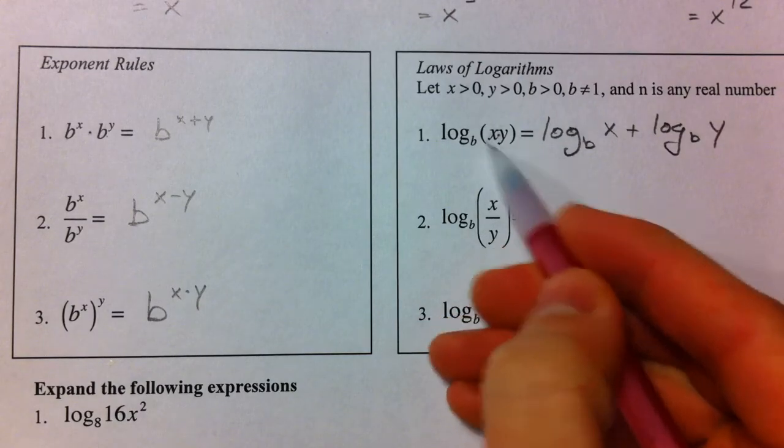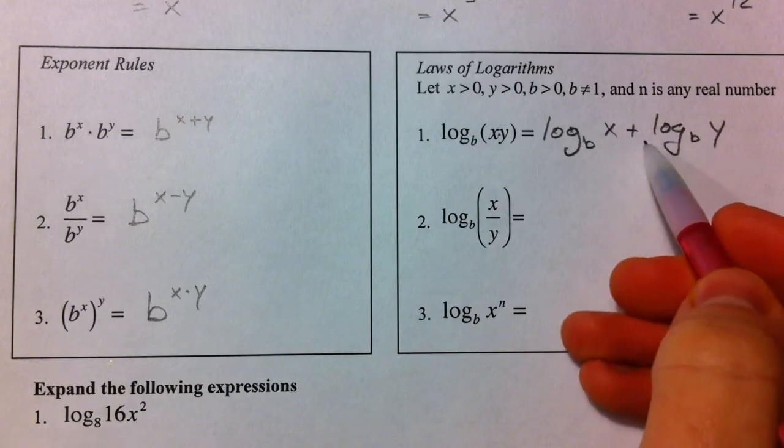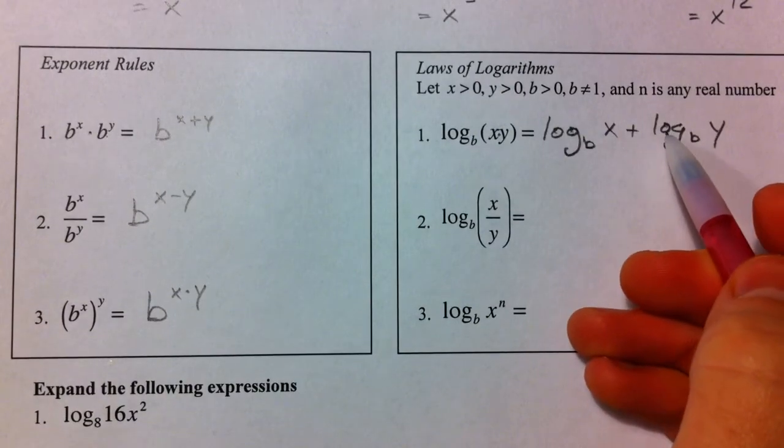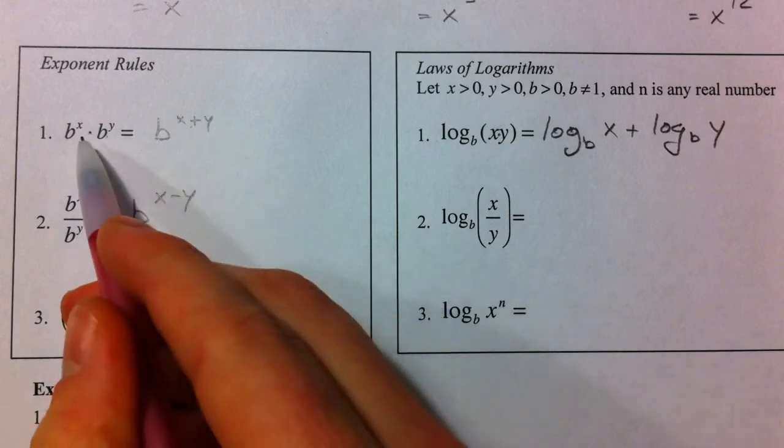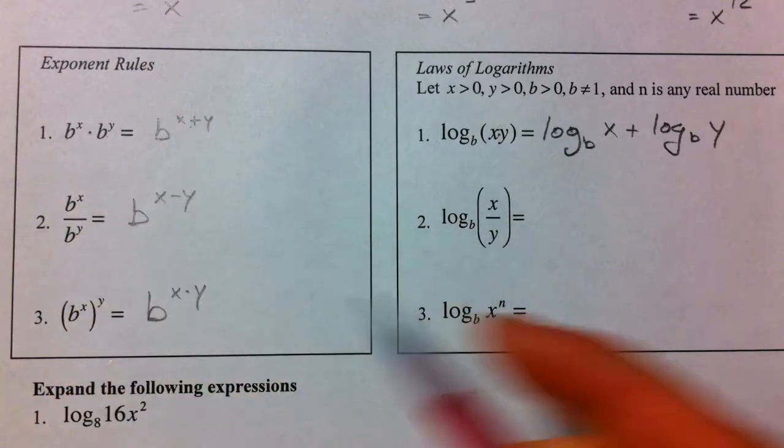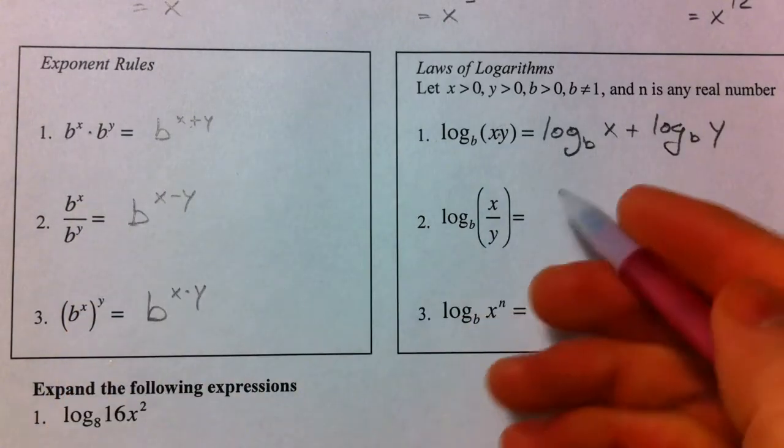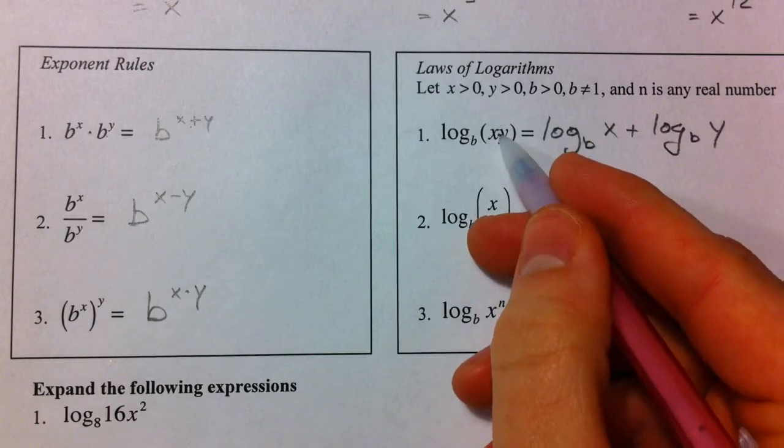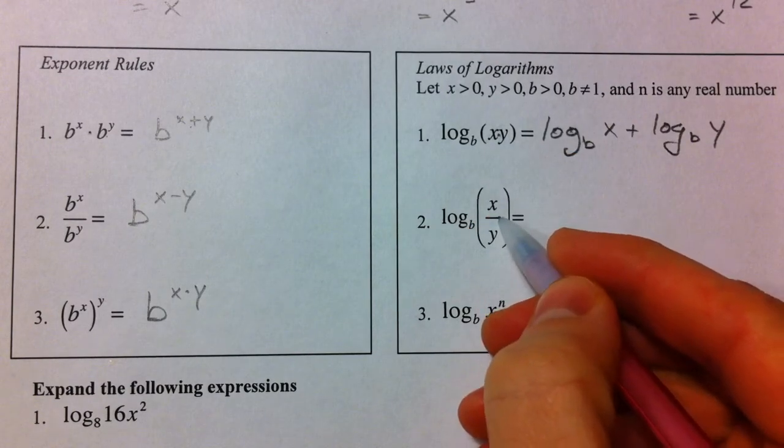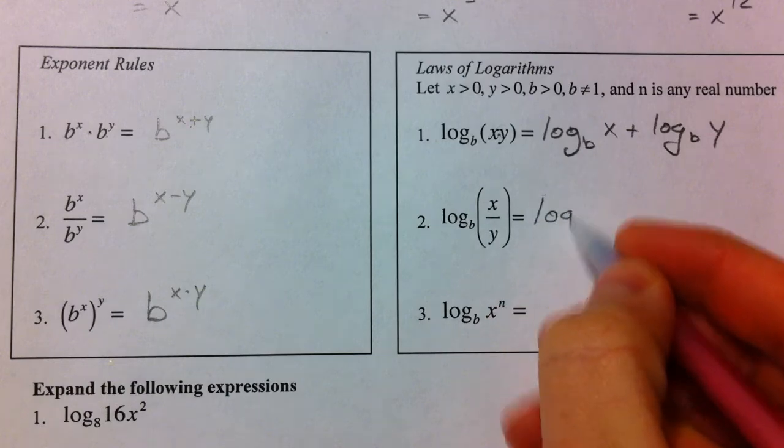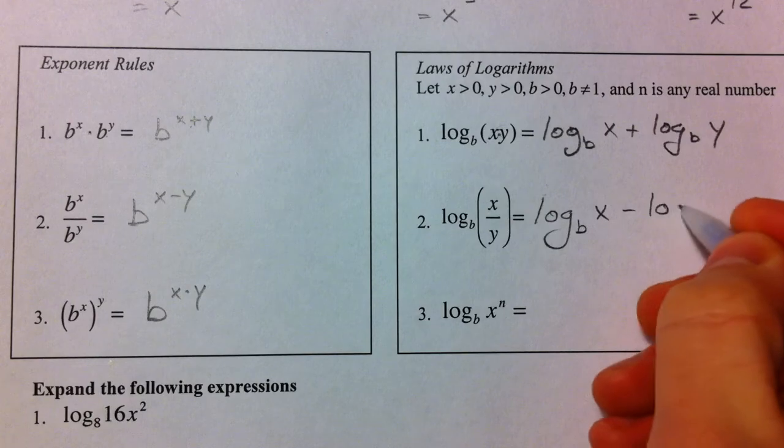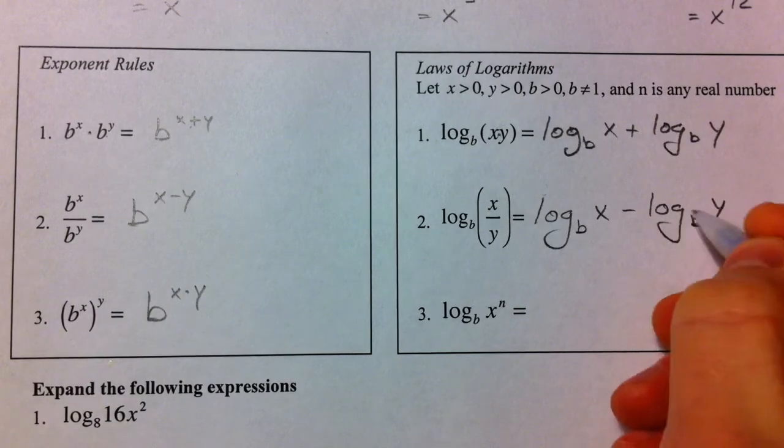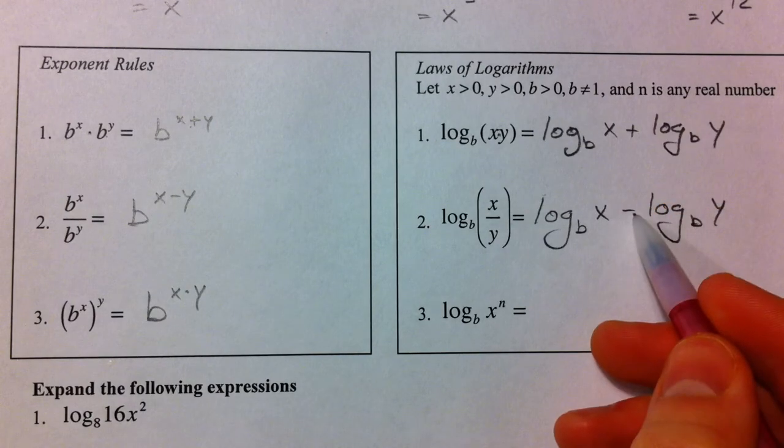So, one log multiplied becomes two logs added. So, it's the opposite of—here we have one exponent that's added into two that are multiplied. It's the exact opposite of what logs do from exponents. And so, in the same way, if you have multiplication, now it's division, we're going to have two separate logs that are subtracted. So, base b of y, and so we're going to subtract them.